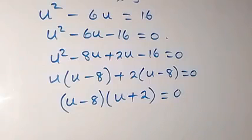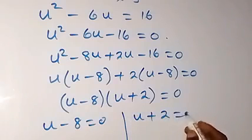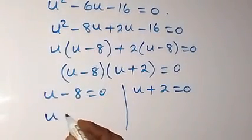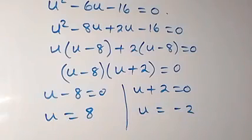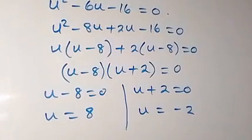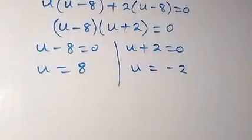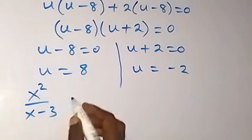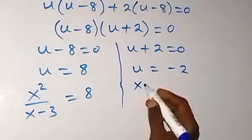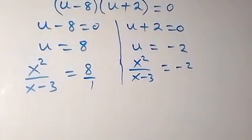Taking (u − 8) as common: (u − 8)(u + 2) = 0. So either u − 8 = 0 giving u = 8, or u + 2 = 0 giving u = −2. Recalling that u = x² / (x − 3), we substitute back: x² / (x − 3) = 8 and x² / (x − 3) = −2.